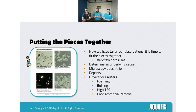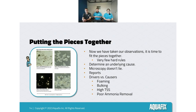Once we've done all our observations and looked at all these indicators, we need to start putting the pieces together into a report. We have pictures from the sample with a small description. When diagnosing something going on in a plant, we need to be careful because many indicators — floc characteristics, EPS, oxygen penetration, filament types, filament abundances, metazoa, protozoa — can oftentimes point to multiple different things, so you need to look at everything together to get a clear picture.